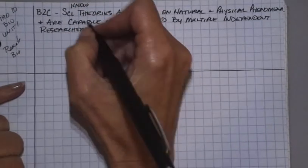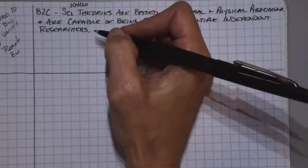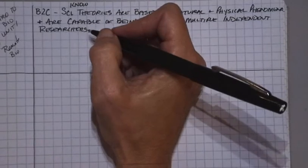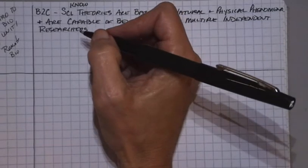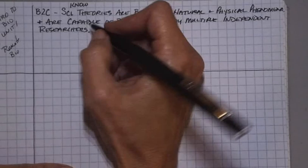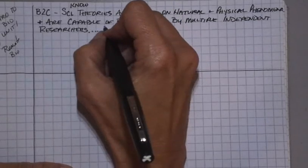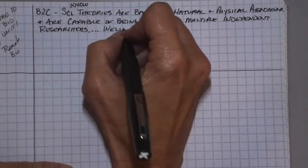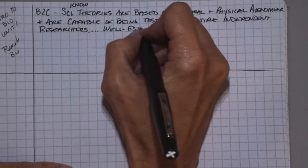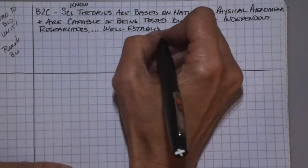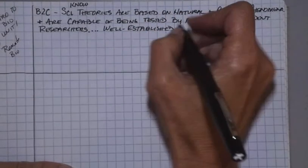They're capable of being tested by multiple independent researchers. And unlike hypotheses, scientific theories are well-established and highly reliable explanations. Well-established. So they are well-established and highly reliable explanations.